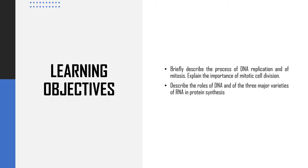The learning objectives for today's lesson will be: first, we are going to see DNA replication and the process of mitosis, and why mitotic cell division is important for us. Then we are going to describe the role of DNA and RNA, the three major varieties of RNA in protein synthesis, and the process of protein synthesis. Let's begin.